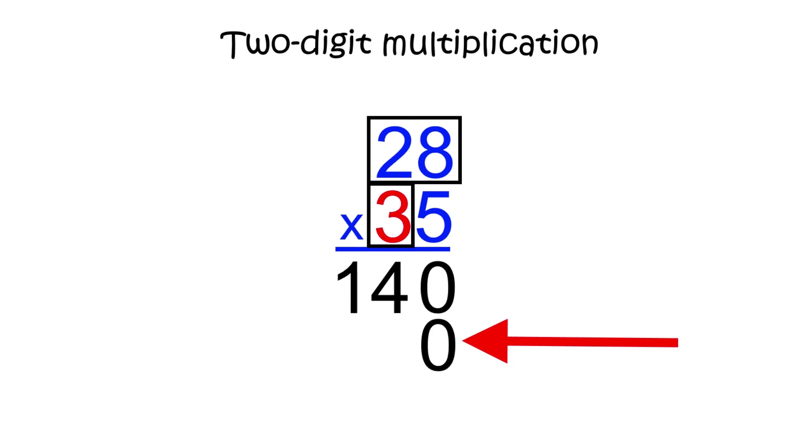Next, we multiply the 8 in 28 by the 3. 8 times 3 is 24. Write down 4 on the second line of your answer space and carry the 2. Finally, let's multiply the 2 and the 3, then add on the value that we carried. 2 times 3 is 6, and when we add on the carried 2, we get 8.